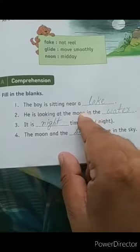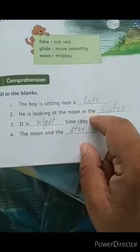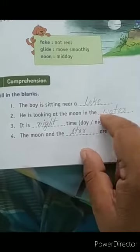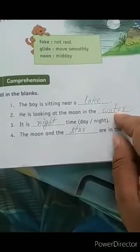Lake. When I sit near a lake, the boy is sitting near a lake. Second one, he is looking at the moon. Where is the moon? Where is the water? So blank will be water.